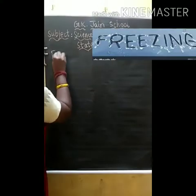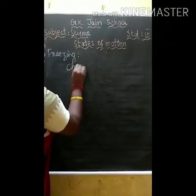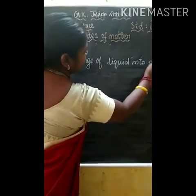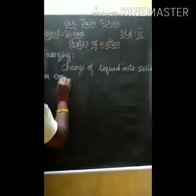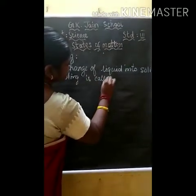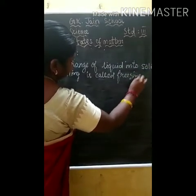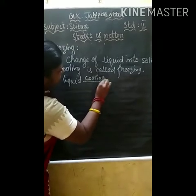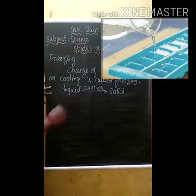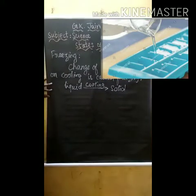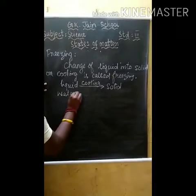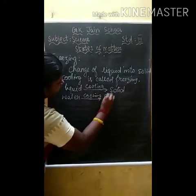Now we are going to see freezing. Change of liquid into solid on cooling is called freezing. For example, water poured in an ice tray and placed in a refrigerator or freezer will cool and become ice cubes.